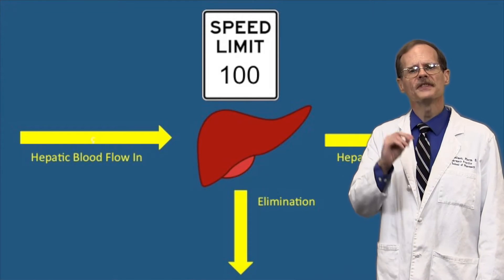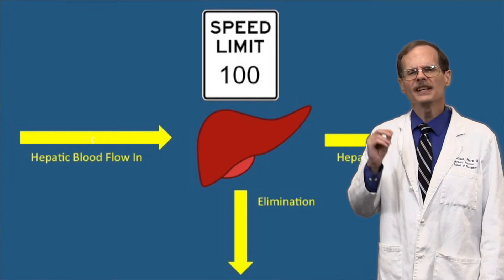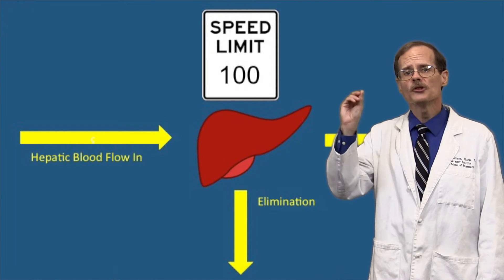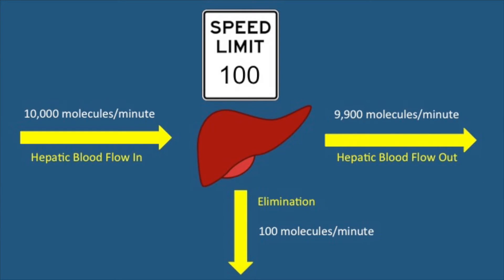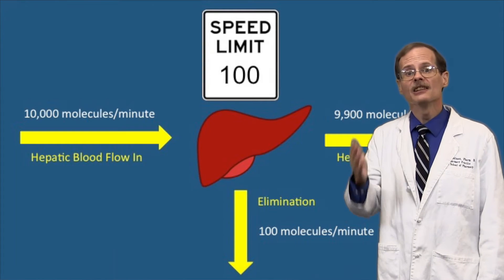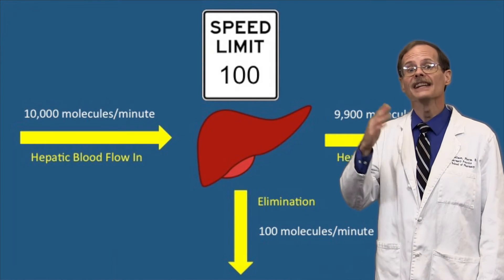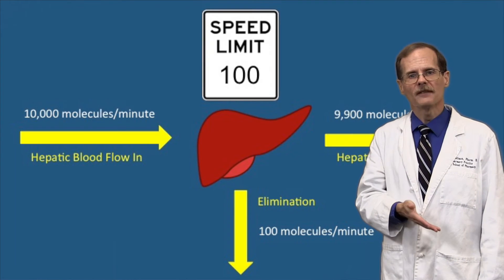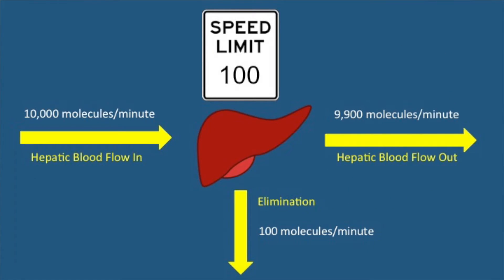Let's think about drugs with low extraction ratios. Suppose the liver's intrinsic clearance only allows it to remove 100 drug molecules per minute. If the blood is delivering 10,000 molecules per minute to the liver, the liver can still only remove 100 molecules per minute. The drug has a low extraction ratio and the liver has a low intrinsic clearance. What if we cut blood flow in half? Then instead of 10,000 molecules per minute, only 5,000 molecules per minute are getting there, but the liver can still only clear 100 molecules per minute — so nothing really changes.